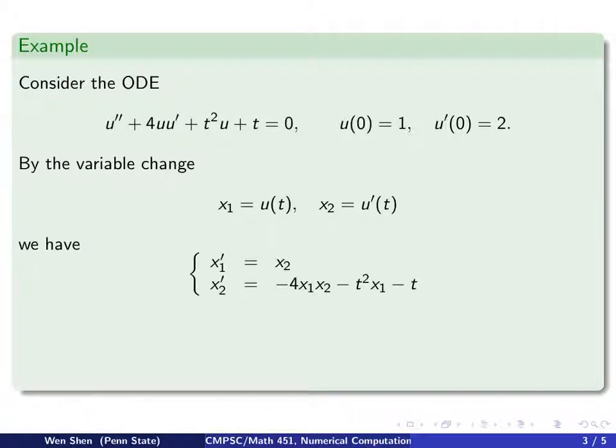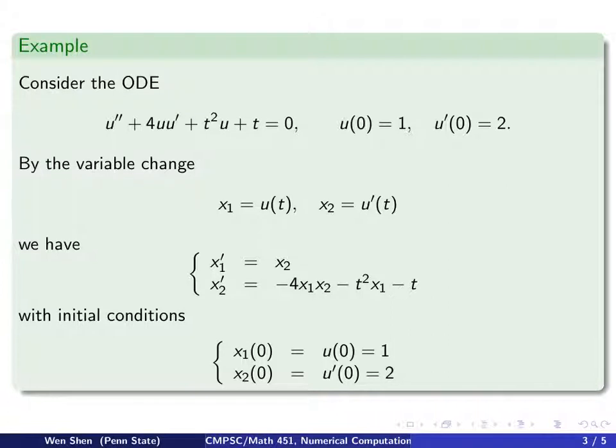We go through this standard variable change. I call my x1 to be u, my x2 to be u prime. Then I can write it into a system. x1 prime would be just x2 because of my variable change. x2 prime would actually be u double prime, which is in the equation here. u double prime is the negative of all that. I have to keep in mind that I need to rewrite all this into x1 and x2. u will be changed into x1 and u prime will be changed into x2. I copy the same thing and change u into x1 and u prime into x2.